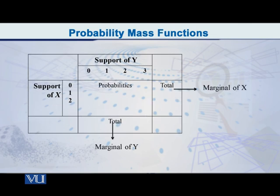On the top, you have the other variable Y and its values. If you want to find the probabilities of these values, you simply add up the probabilities in the body of the table column-wise, and in the bottom margin of this table you get those sums, which are the probabilities of those values of Y that you have in the top row. So: X and probabilities of X, Y and probabilities of Y.